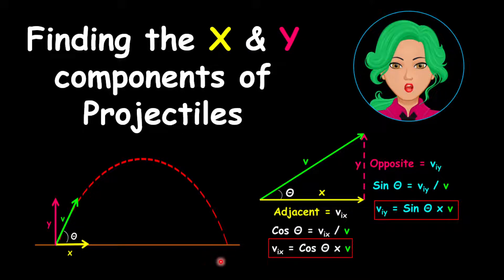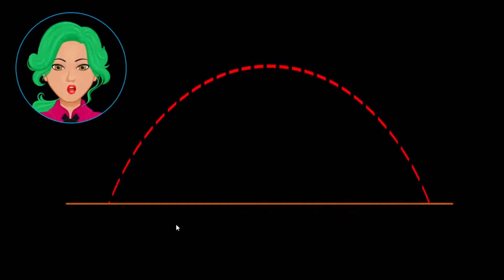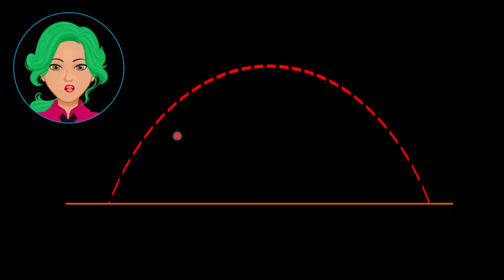Firstly, remember that projectiles are parabolic motions. While the object is moving along its trajectory, there is a vertical and a horizontal motion. There are three important points to remember.